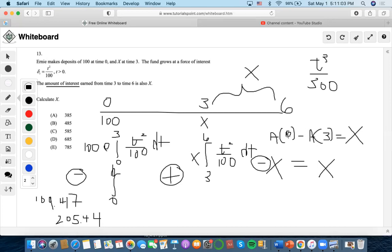Now we found both of these values, let's subtract them. So 205.44 minus 109.417, and we get 96.026. So we have this part of the equation solved.